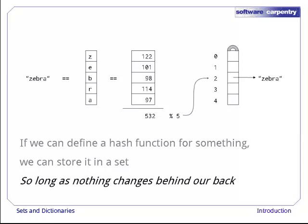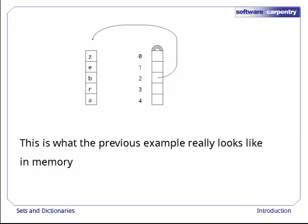But this only works as long as nothing changes behind our backs, which is why we got that strange unhashable error message at the start of this episode. Here's a picture of what's in memory when we put zebra in a hash table. The string's hash code is 532, and the hash table's length is 5. So since 532 mod 5 is 2, we put a reference to the string in location 2 in the hash table.